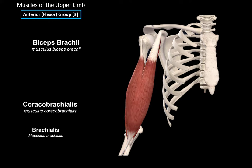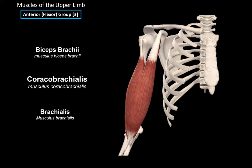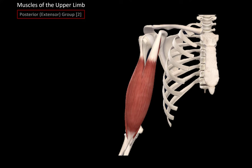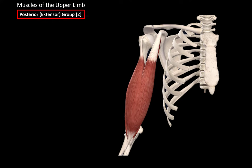So that was the three muscles of the anterior group. Next we have the posterior, or extensor group. Let's go ahead and look at the posterior view of the arm.